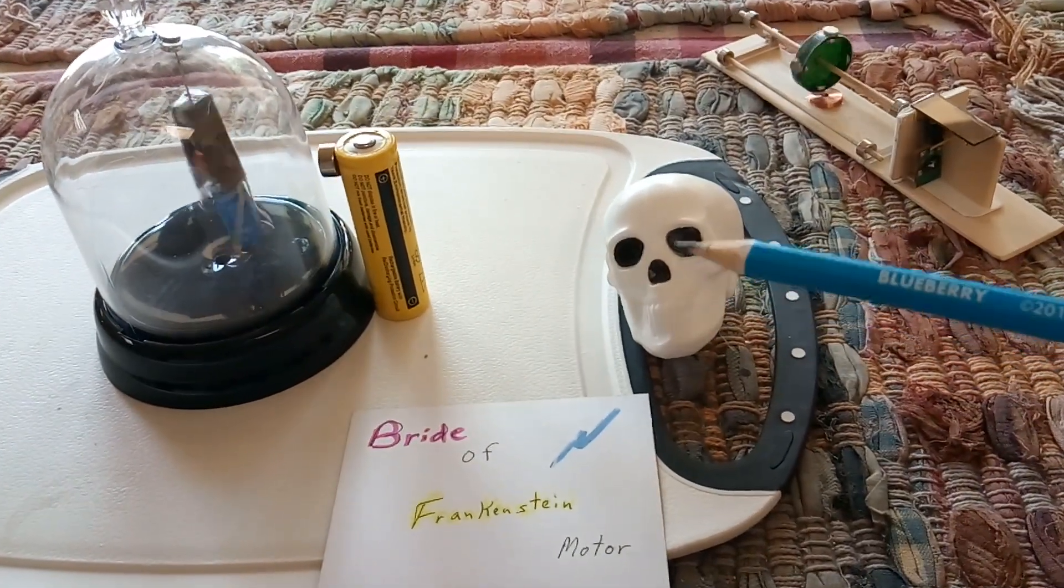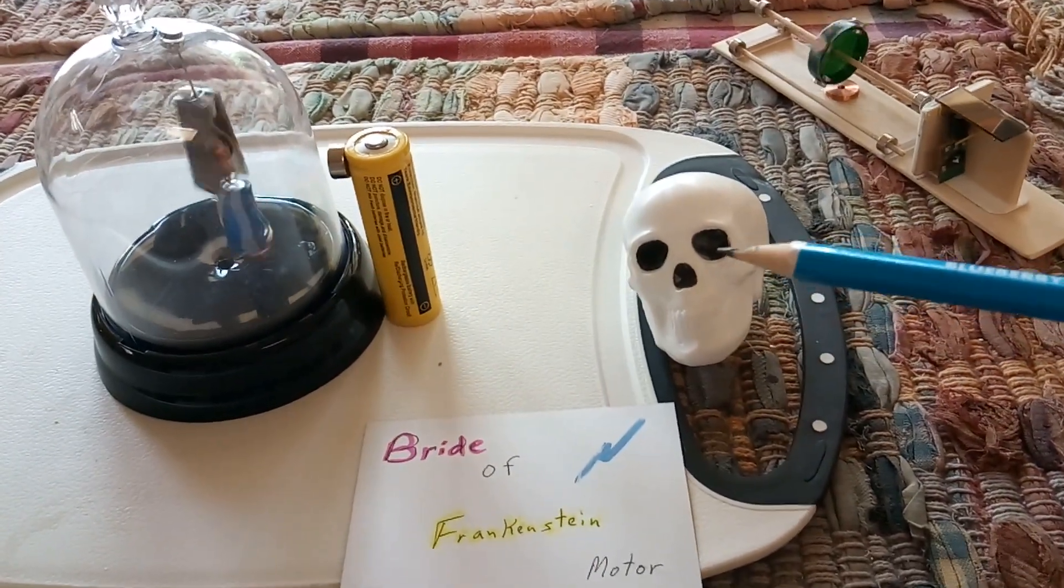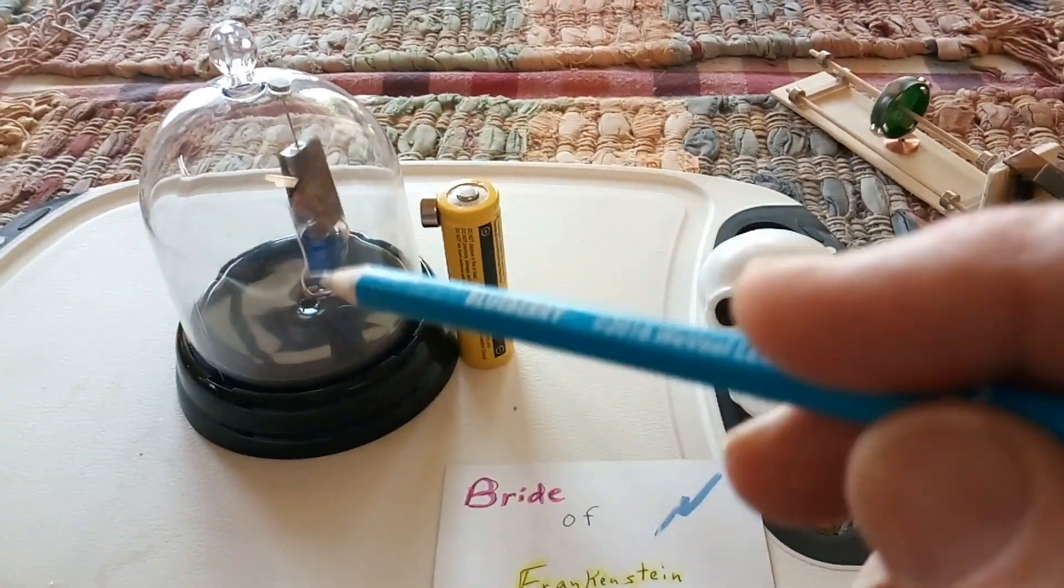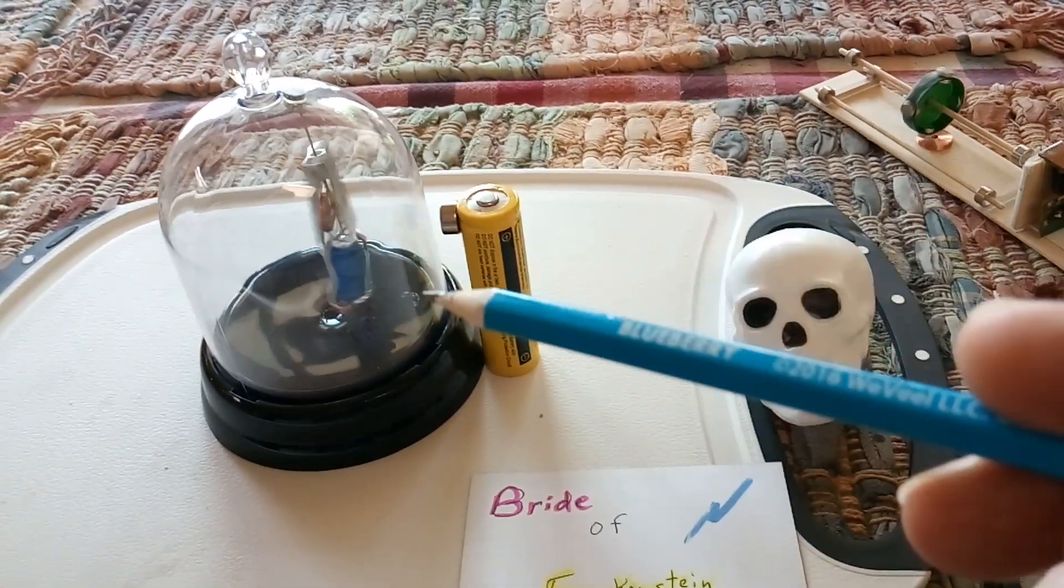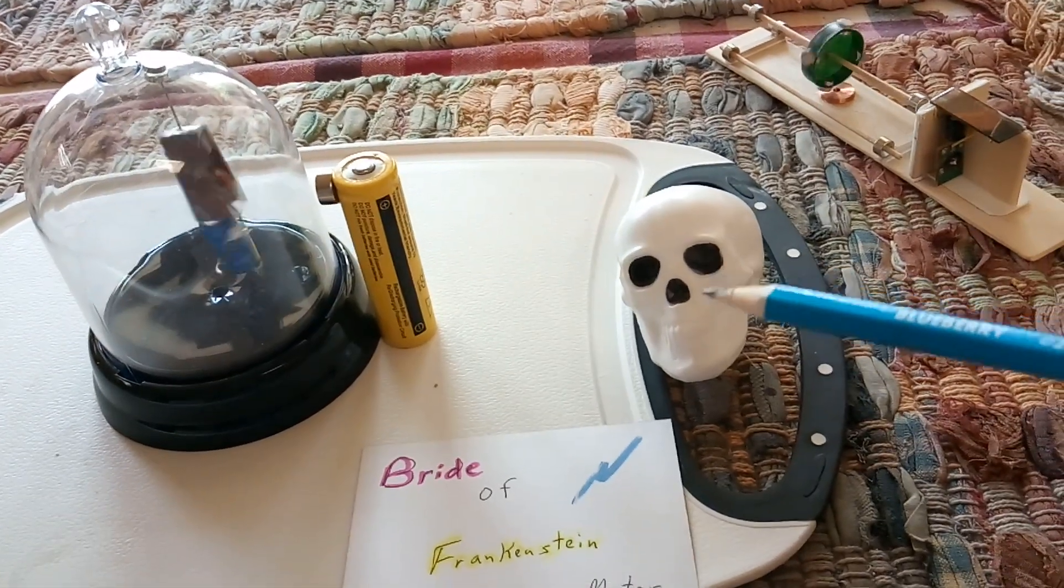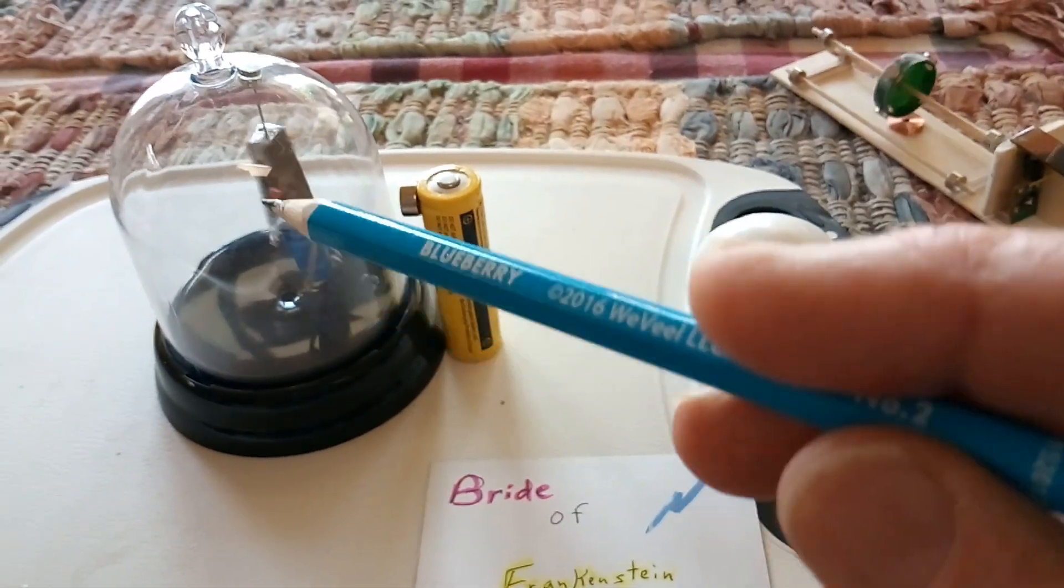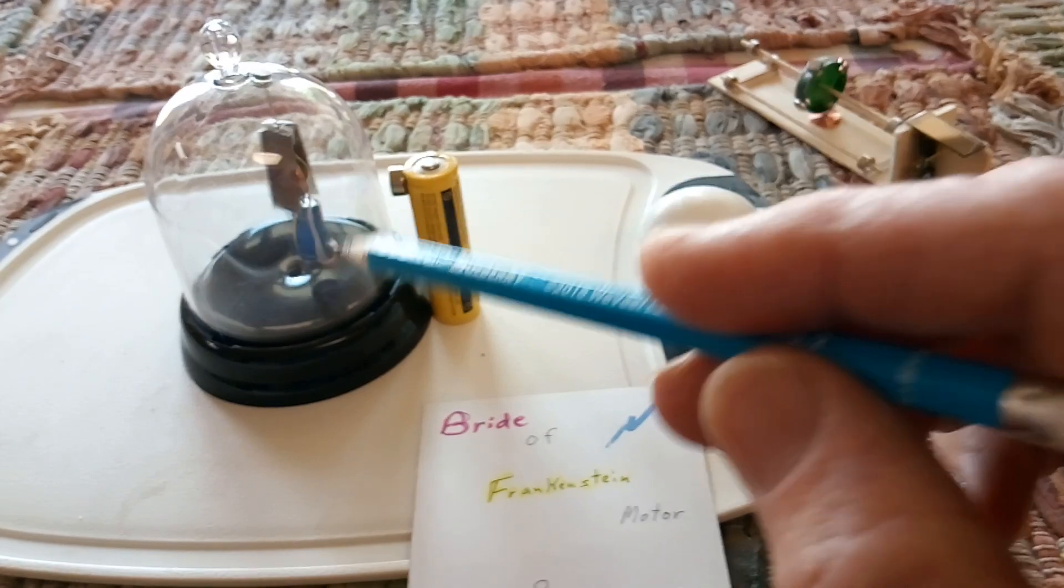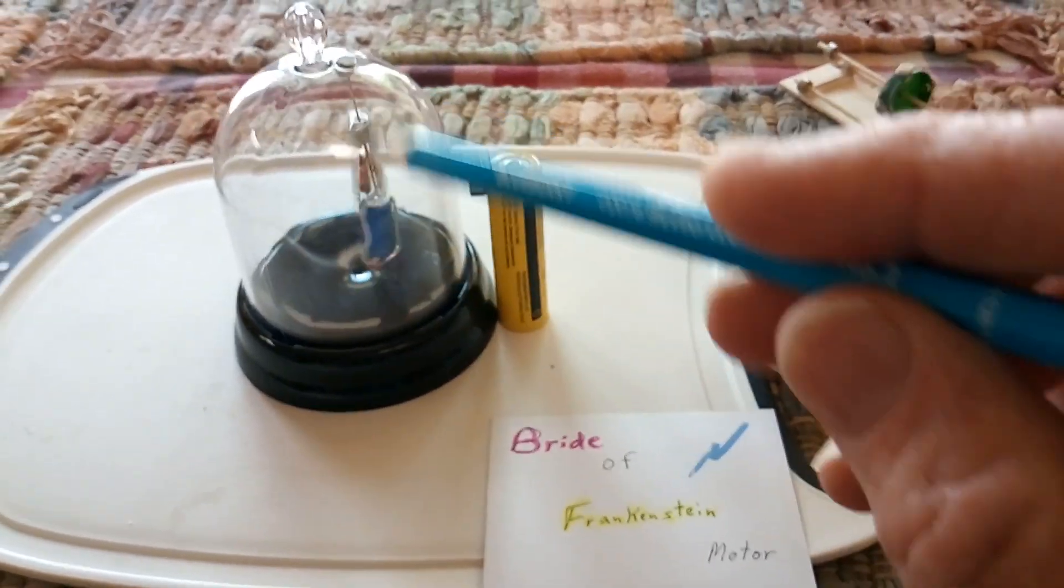These domes are what you get in Halloween stores for a dollar. When Halloween rolls around again, I'll get a bunch more. They're plastic and cost a buck. This had a skull in it that I took out, but they're real handy for these little projects.